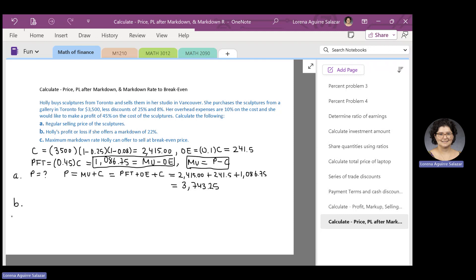In part B, we want to know Hoed's profit or loss if she offers a markdown of 22 percent. So, we have markdown equals 22 percent. That's measured with respect to the price of the sculptures. And we want to know about Hoed's profit or loss. 22 percent of the price corresponds to 0.22 multiplied by the price. And when we multiply 0.22 by P, and P is 3,743.25, we find the number 823.515. That is the markdown.